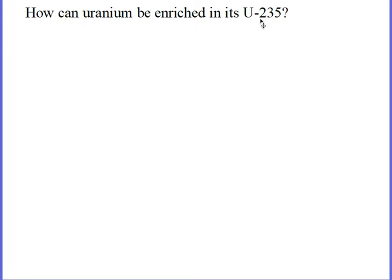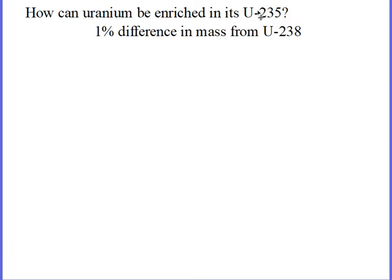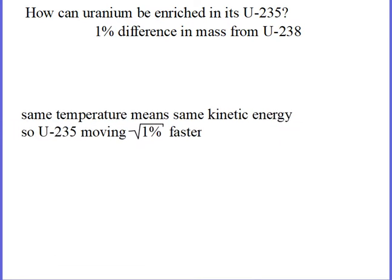So how do you get uranium enriched? All you have is this very small difference in mass — that is the only difference between the undesirable uranium isotope and the desirable one. Because mass is the only thing we have to work with, you cannot separate them by chemical means or physical means. So what we are going to do is to turn the uranium — both types — into a gas called uranium hexafluoride.